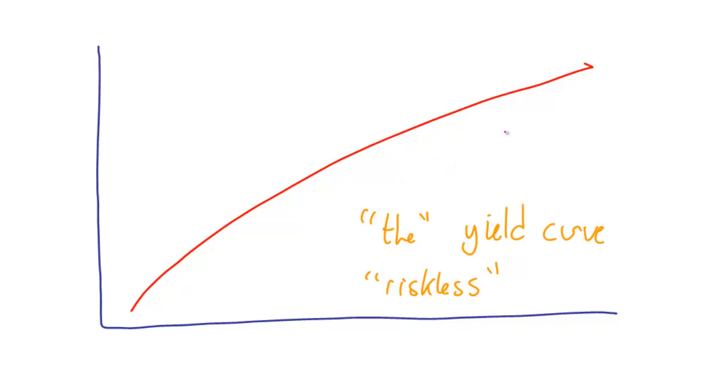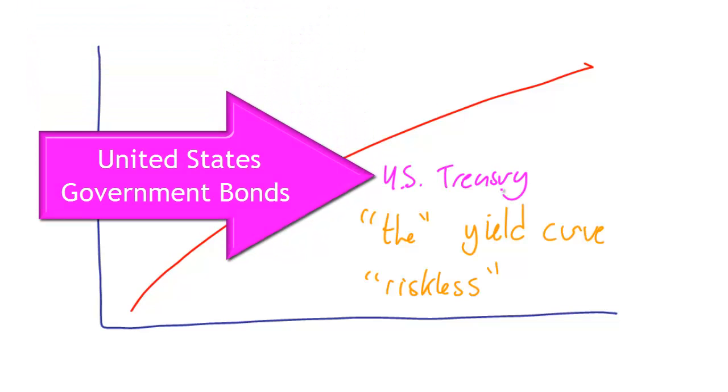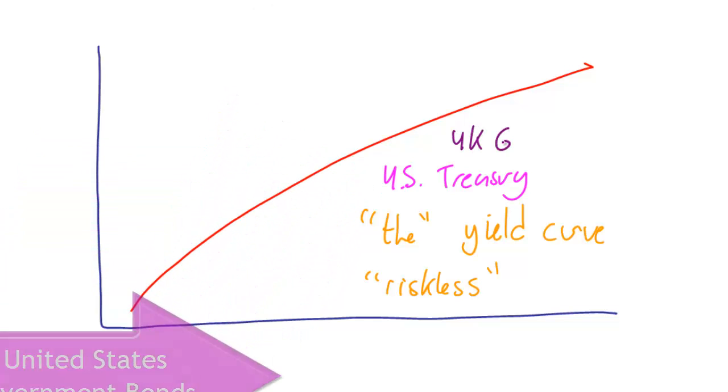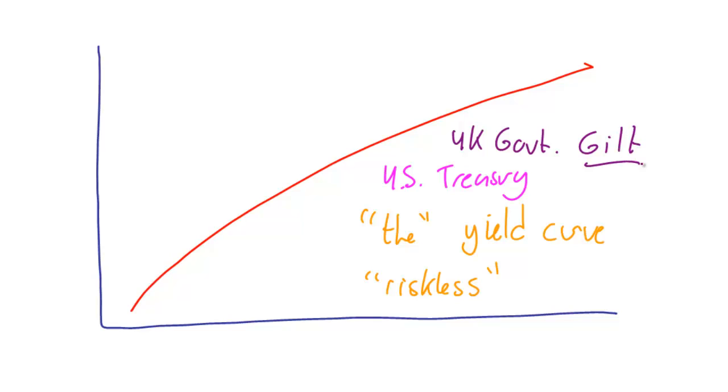In the United States, for instance, when they say the yield curve, they typically mean the U.S. Treasury yield curve. In the U.K., when they say the yield curve, they typically mean the U.K. government gilt or government bond yield curve.